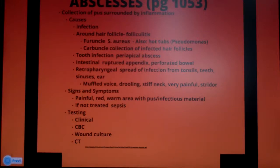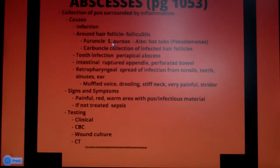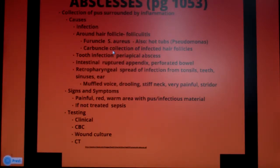What you don't want is for it to turn into a carbuncle. A carbuncle is a collection of infected hair follicles. A furuncle — basically a boil — is a single infected hair follicle. Carbuncles are usually found on the back of the neck, upper back, or lateral parts of the thighs. Even though furuncles hurt, a collection of them hurts even more — you get painful, swollen masses that drain through multiple sites.